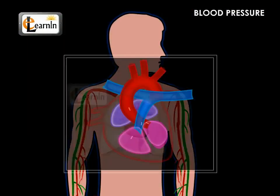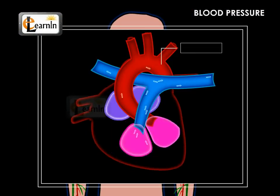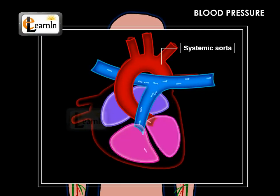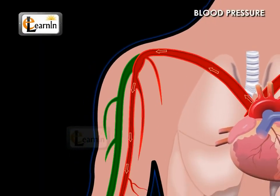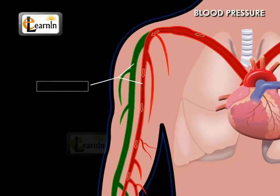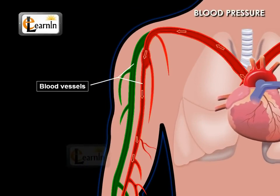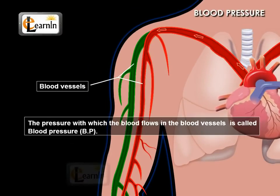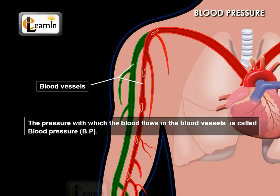Similarly, when the heart pumps blood into the systemic aorta or into the pulmonary trunk, the blood flows with pressure in the blood vessels. The pressure with which the blood flows in the blood vessels is called the blood pressure, usually called BP.